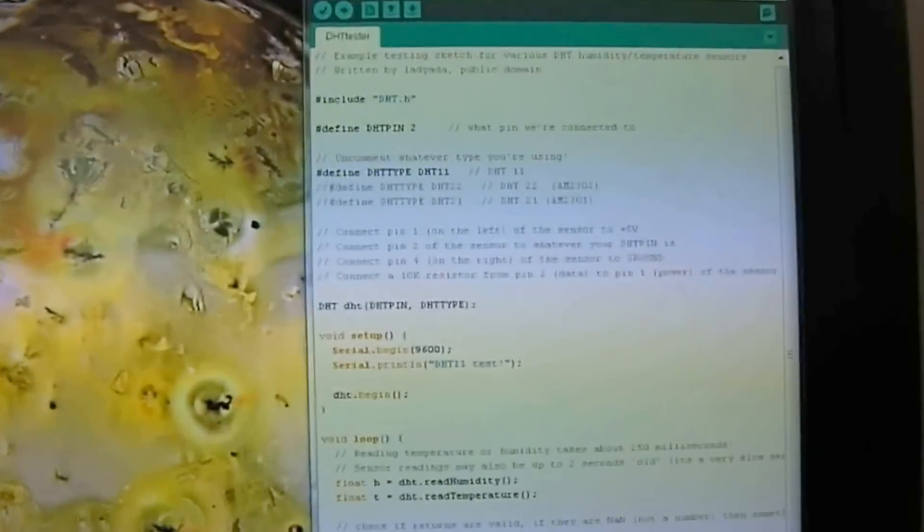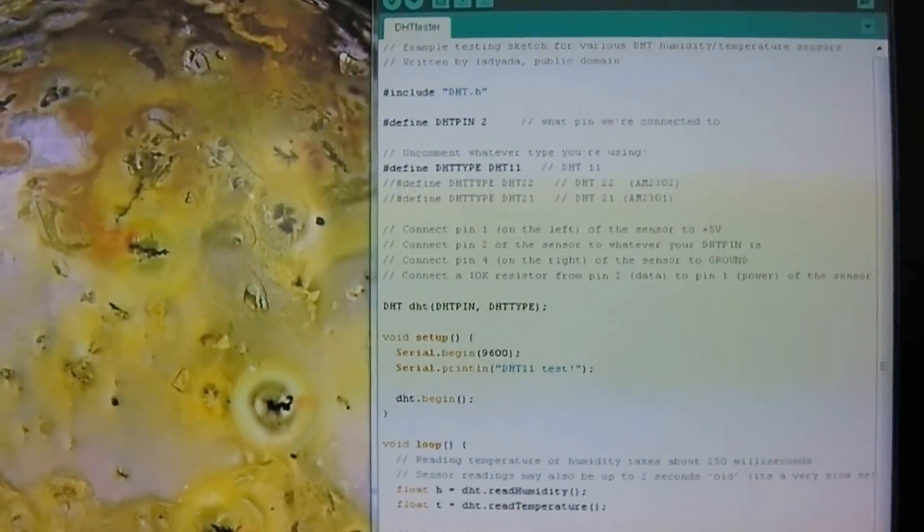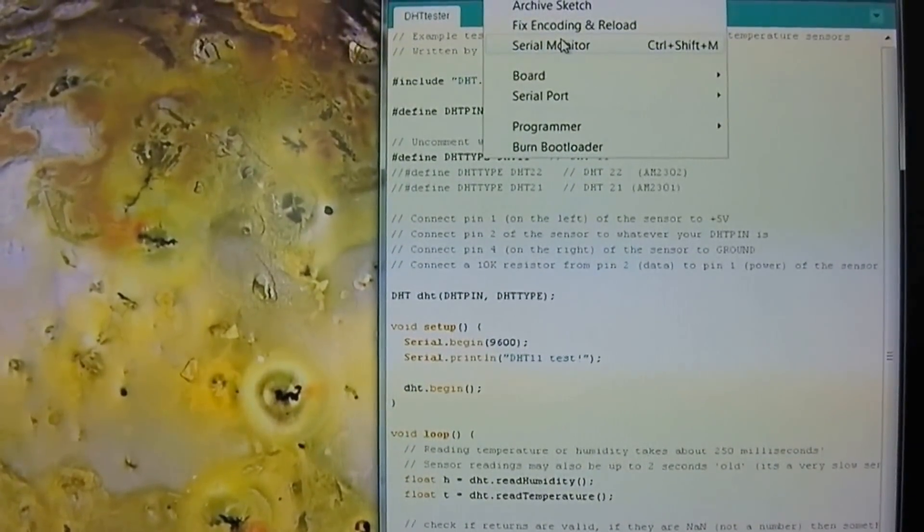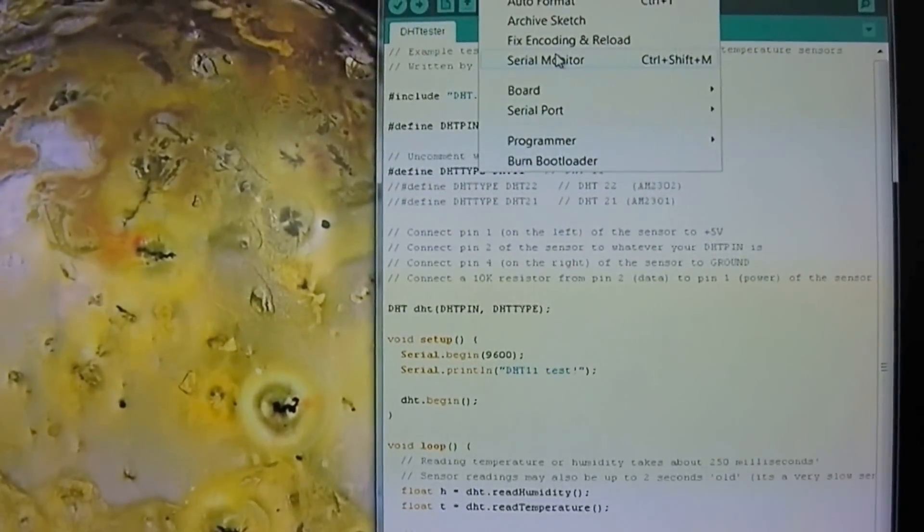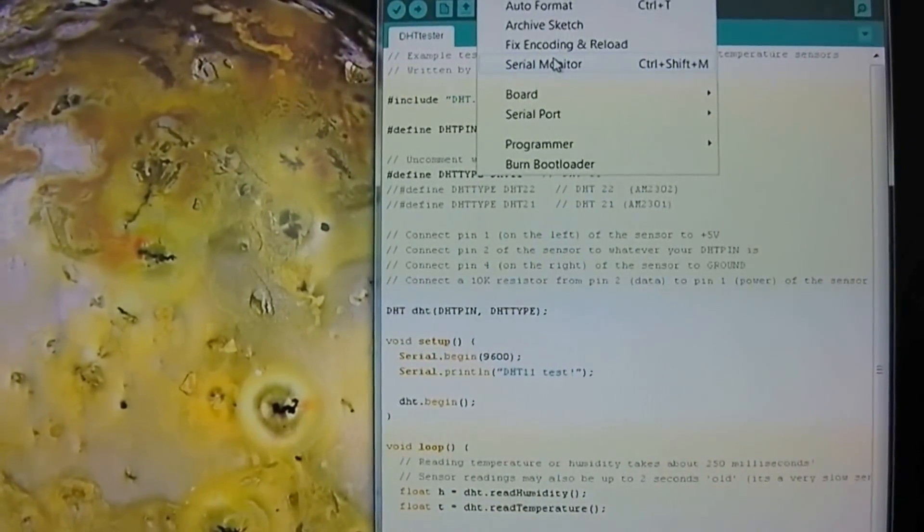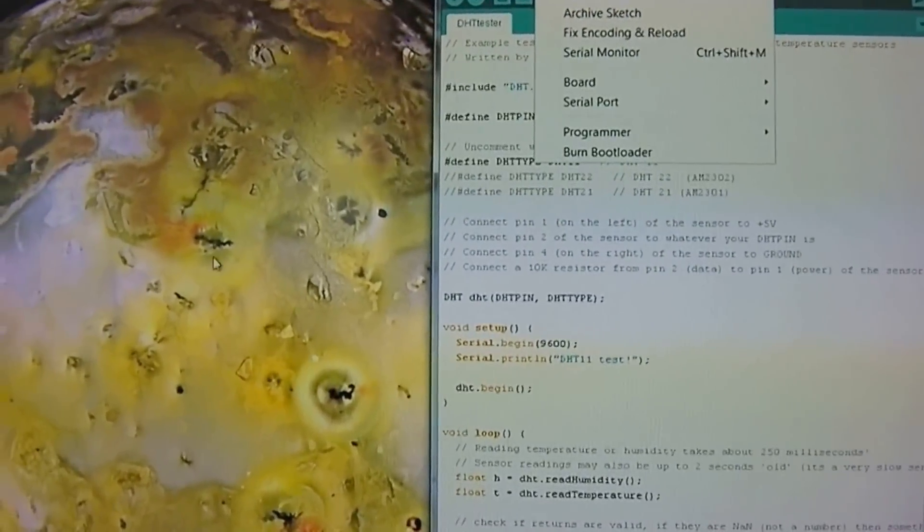Once the code is all working, you just go to tools and then serial monitor. And that's how you'll actually view the output coming out from the Arduino. And that's pretty much it.